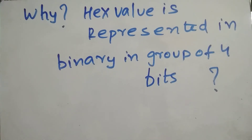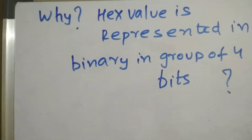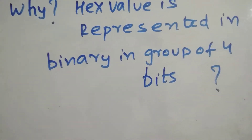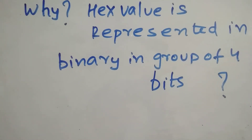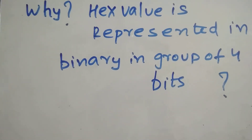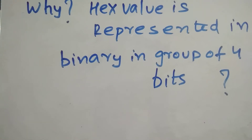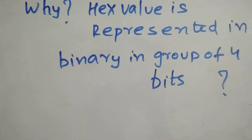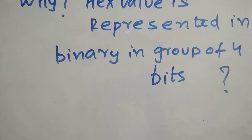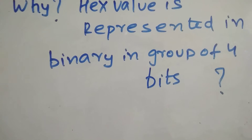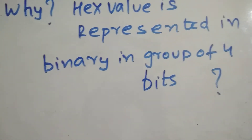Hey guys, welcome back. Today's topic: what's the reason behind why a hexadecimal value is represented in binary in a group of four bits? So why is a hexadecimal digit represented in binary as four bits? What's the exact reason?